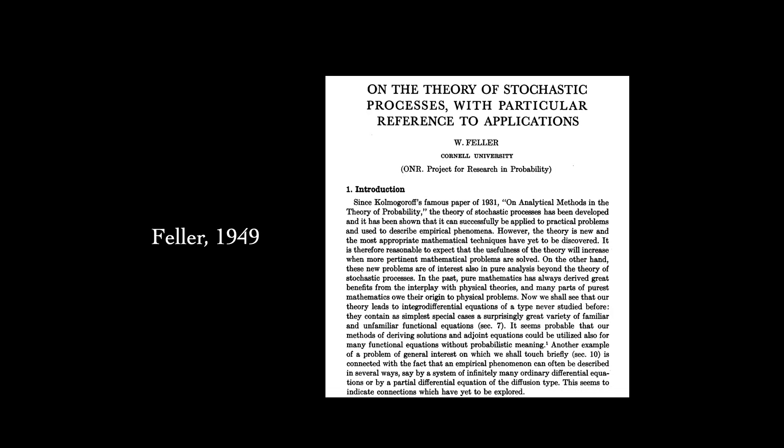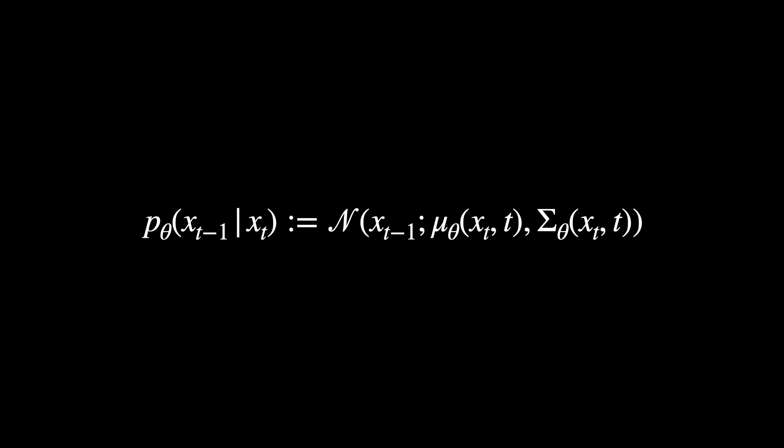So diffusion models leverage this observation, parameterizing each learned reverse step to also be a unimodal, diagonal Gaussian. Aside from the sample at time t, the model also takes t as input in order to account for the forward process variant schedule. Different time steps are associated with different noise levels, and the model can learn to undo these individually.